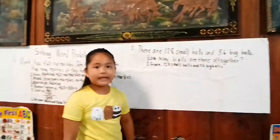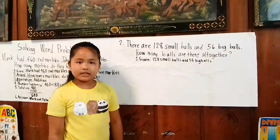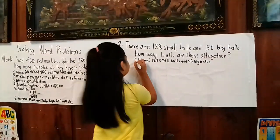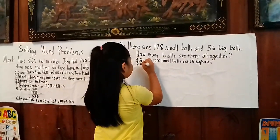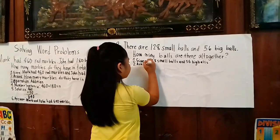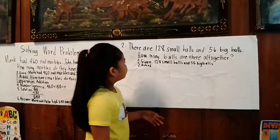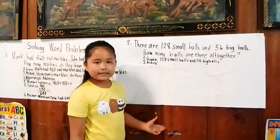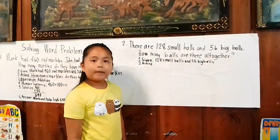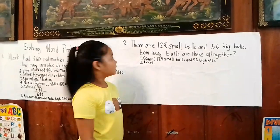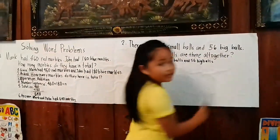What is step two? The second step is 'Asked.' What is the ask in the problem? The ask in the problem is: How many balls are there altogether?